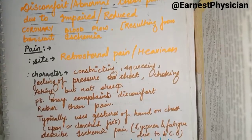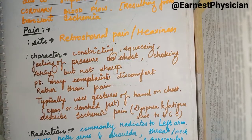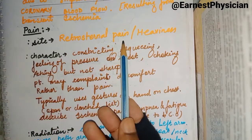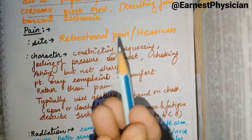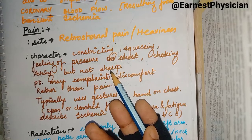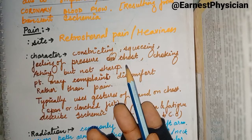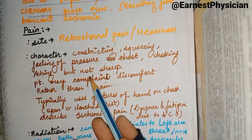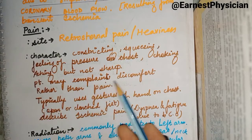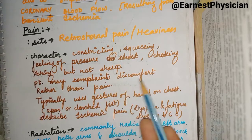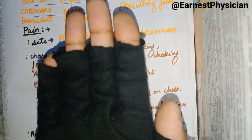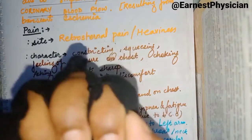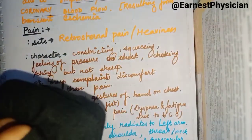The pain has very important characteristics. Regarding the site, it is retrosternal — behind the sternum. In terms of character, we have a constricting pain, squeezing, or pressure on the chest — a choking pain, an aching pain. It is not a sharp pain. The patient complains of great discomfort. Typically the patient uses gestures, keeping hands open on the chest or clenching the fist to indicate the severe discomfort.